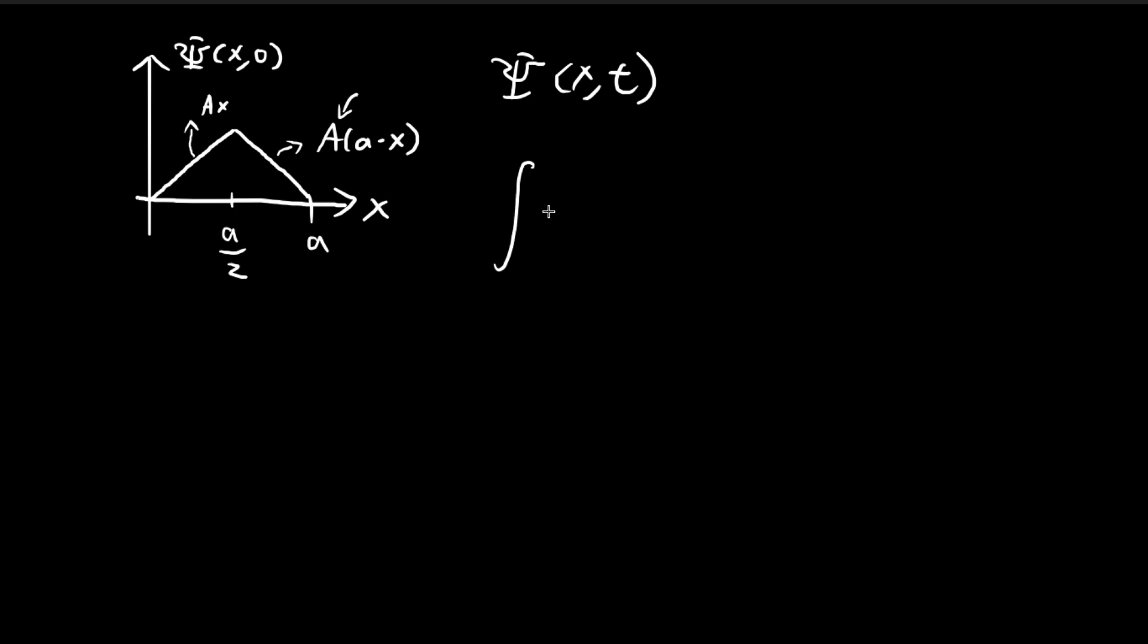And we're going to use this relationship here. So by the probability interpretation, we know that this integral is going to be equal to 1. So we're going to substitute the numbers into this relationship here and then we can deduce what this capital A should be.